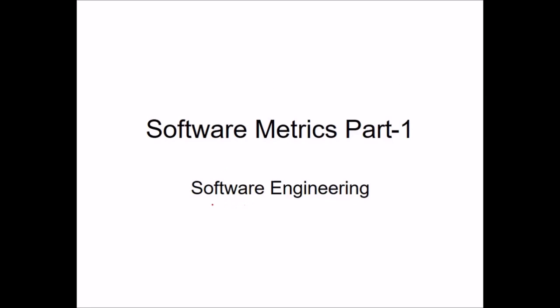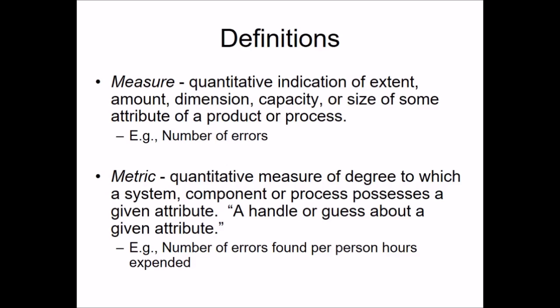Software metrics is an important part of software engineering. Let us understand the difference between a metric and a measure. A measure is a quantitative indication of extent, amount, dimension, capacity, or size of some attribute of a product or process — for example, number of errors. A metric is a quantitative measure of the degree to which a system, component, or process possesses a given attribute, like errors found per person-hours expended.